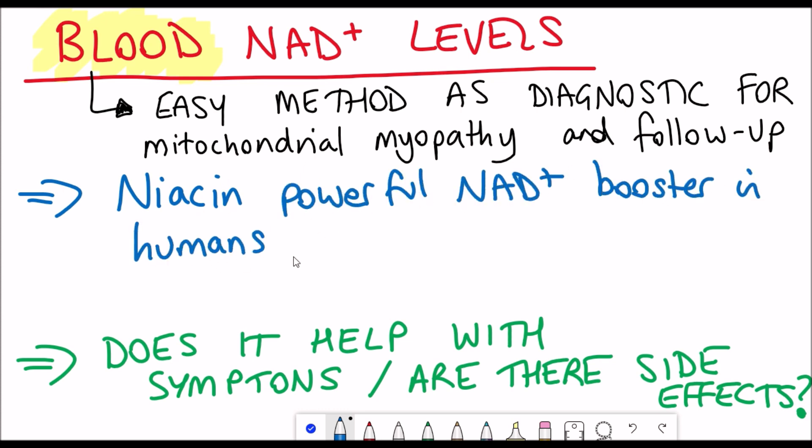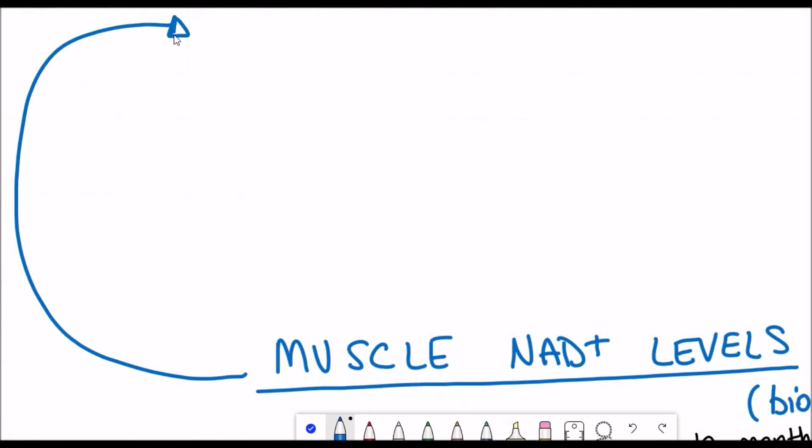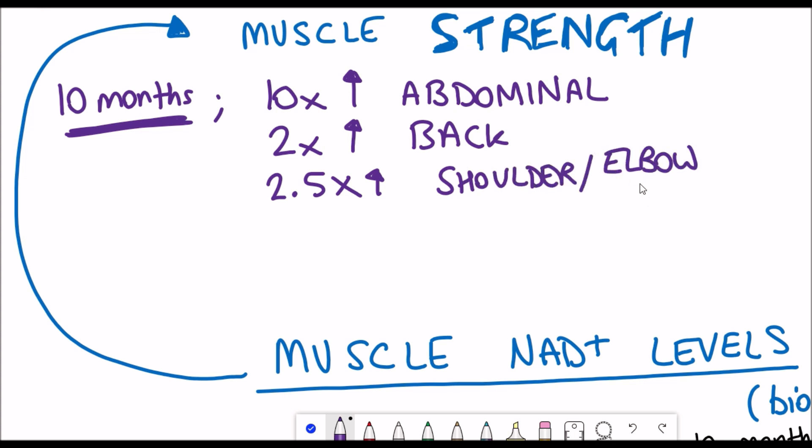So far they've proved that niacin is a powerful NAD Plus booster in humans, both in healthy controls and patients, but does it help with the symptoms? To do this, one of the things they looked at is whether or not they could restore muscle strength. One thing I haven't actually mentioned yet, which might just be of interest, is why you do see a decrease in muscle strength when you have these mutations in the mitochondria. And that's mainly because the muscle is such an energetic tissue and so it's vulnerable to defects in the mitochondrial metabolism.